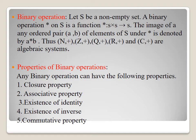We see properties of binary operations. Any binary operation can have the following properties: first, closure property; second, associative property; third, existence of identity; fourth, existence of inverse; fifth, commutative property.